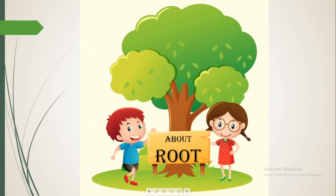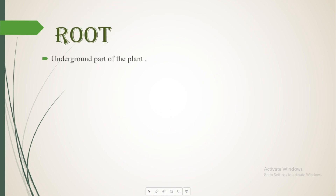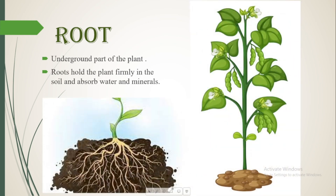Let's study now about the roots. Roots are the parts present underground — that is, the underground part of the plant. Roots hold the plant firmly in the soil and help absorb water and minerals. As you can see in this image, the roots are spread all around the soil, supporting the main plant and helping in absorbing water and minerals.